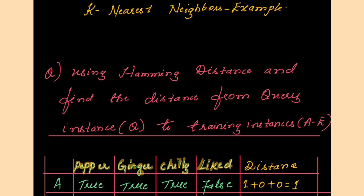But this example will be different from the previous ones. The reason is, if you see the algorithm steps for KNN, you have observed that if the attribute values are continuous, then you have to make use of the Euclidean distance as the distance metric. Whereas if the attribute values are categorical or binary, then you have to make use of the Hamming distance.